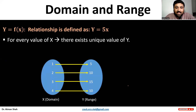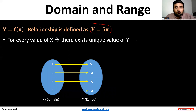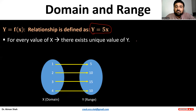For every value of x there exists a unique value of y. For example, when x = 1, y = 5; when x = 2, y = 10. So {1, 2, 3, 4} is our domain and {5, 10, 15, 20} is our range.